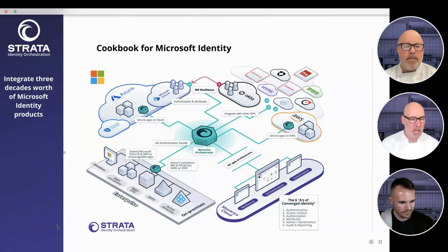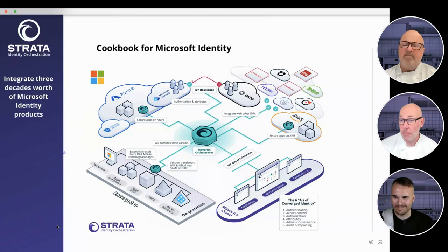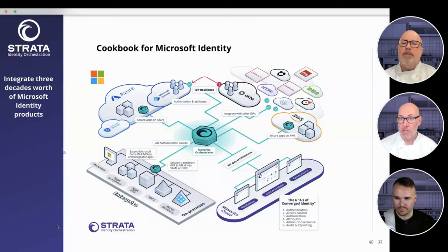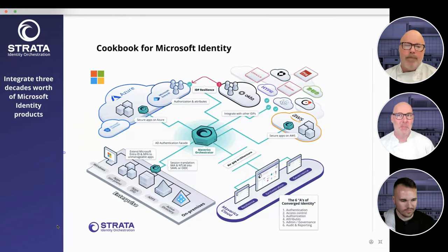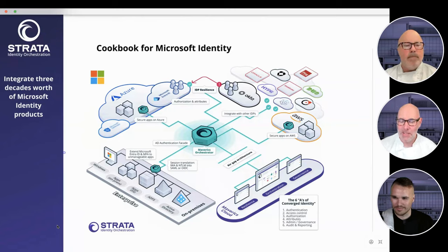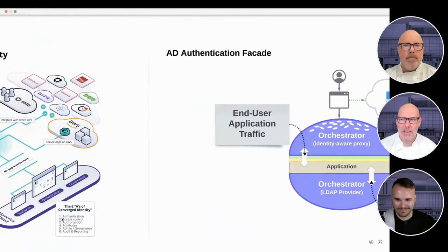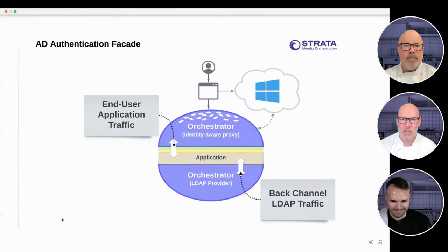What we're talking about is not taking Active Directory completely out of the equation, because there's still a lot of valuable things that Active Directory does — it contains useful attributes and information for network-related security. But what we are talking about is the authentication process. This is a good point to bring in a guest expert, because one of the things listed in the new cookbook is this idea of an AD authentication facade. Chef Granville, can you walk us through what this is?